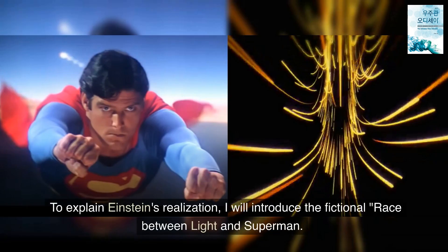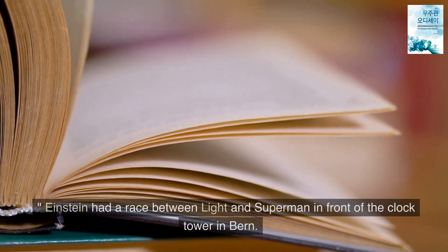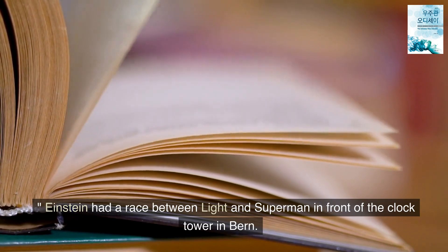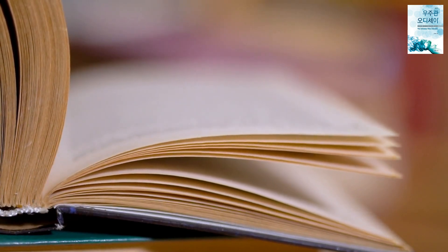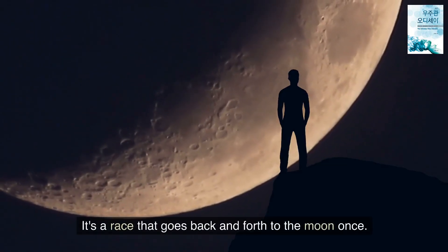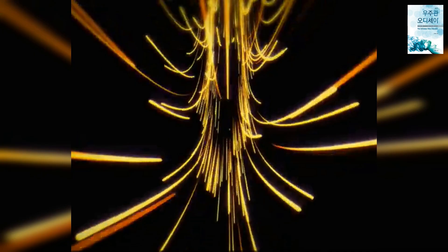To explain Einstein's realization, I will introduce the fictional race between light and Superman. Einstein had a race between light and Superman in front of the clock tower in Bern. It's a race that goes back and forth to the moon once. The result, of course, was the victory of light.